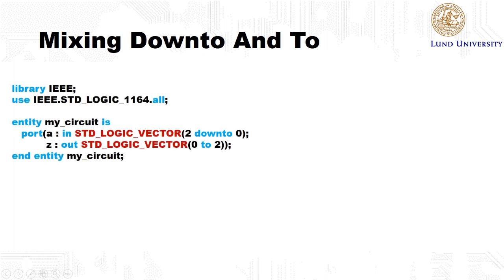When describing signal buses in VHDL, you are of course free to choose from the keyword down to or to. However, you should be very careful if you start to mix these two. So in this example, we have an input A that we declare as 2 down to 0. Then we have an output set that we declare 0 to 2. So these two have the opposite numbering of the bits.